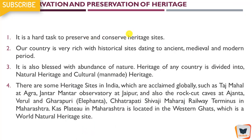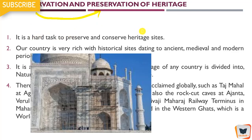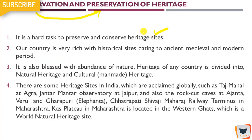Then conservation and preservation of heritage is very important — you need to conserve it and also preserve it for future generations. Heritage sites are a hard task to preserve and conserve because those things were built 300-400 years ago, so the government needs to take many steps to conserve them. Our country is very rich with historical sites dating to ancient, medieval, as well as modern periods. Ancient period includes caves, medieval period includes Taj Mahal and Red Fort, and in the modern period come structures built by the British, like Chhatrapati Shivaji Maharaj Terminus — CST — which comes in the modern category.